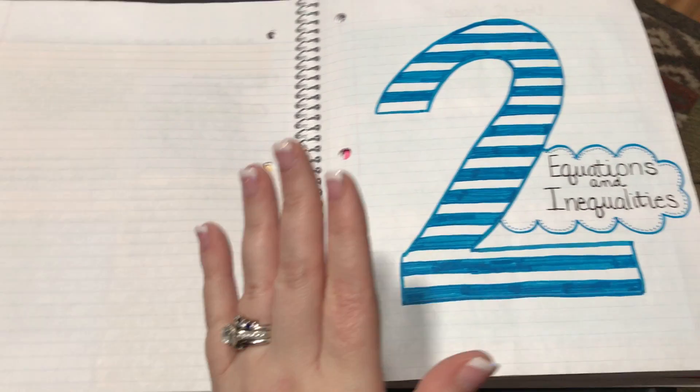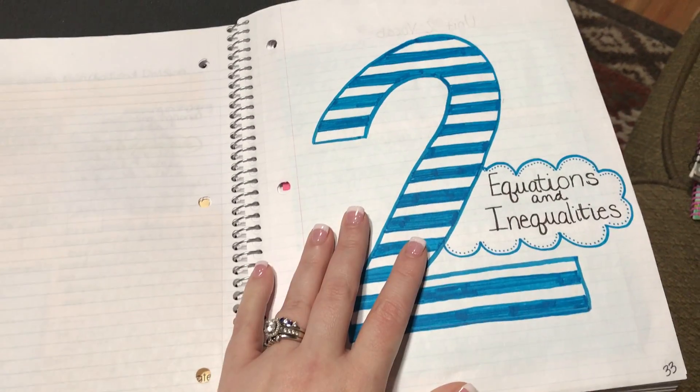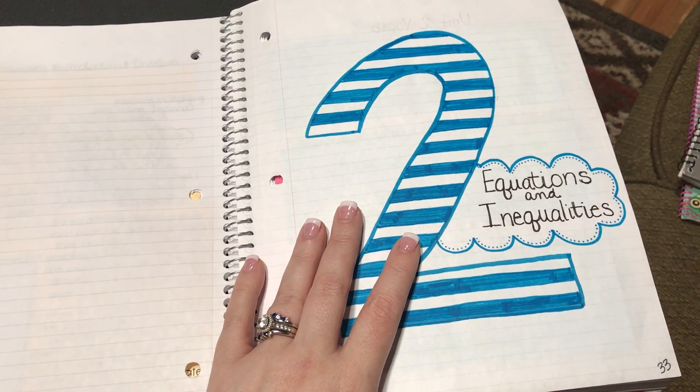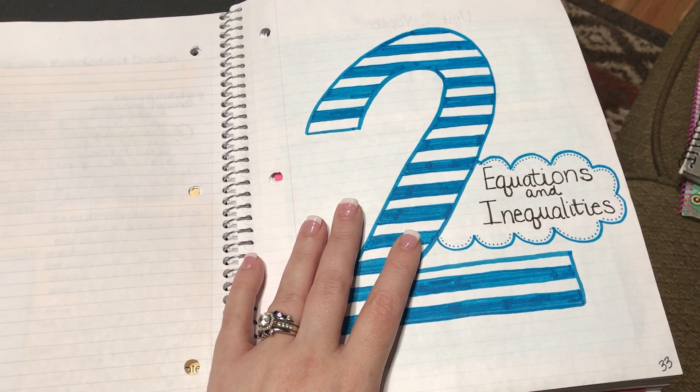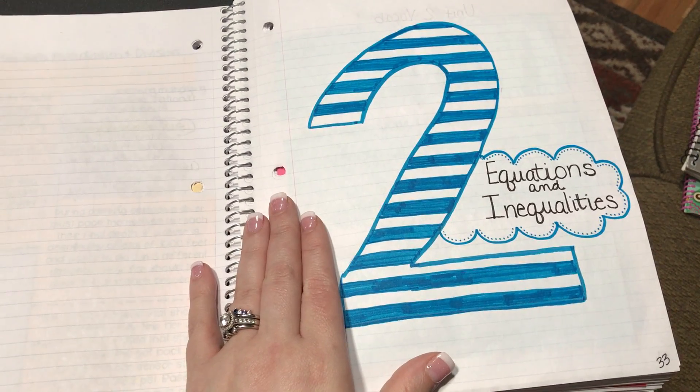So I hope you enjoyed this little update on how I set up unit one. If you're wanting to see unit two or any of the other following units, those videos are available in my photo gallery online for seventh grade. So if you own the seventh grade interactive notebook you can see those videos as well. Thanks!